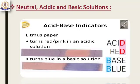The solution in which hydrogen ion concentration is greater than the concentration of hydroxide ions is called an acidic solution. The solution in which hydrogen ion concentration is equal to the hydroxide concentration is termed as a neutral solution. And the solution in which hydroxide concentration is greater than the concentration of hydrogen ions is termed as a basic solution.